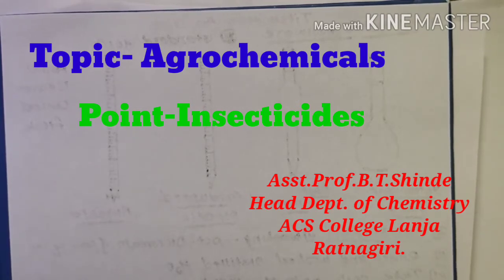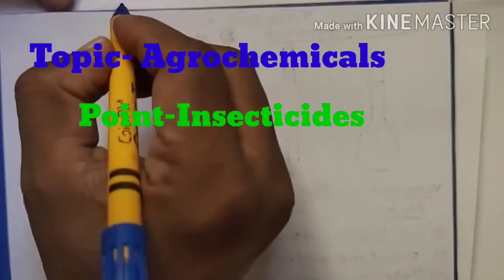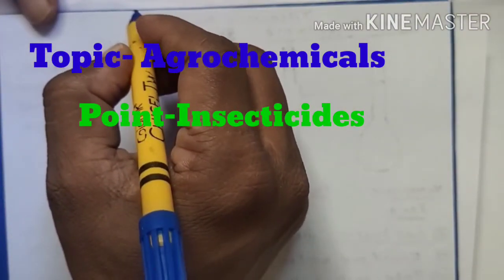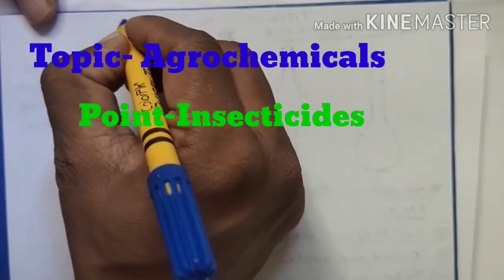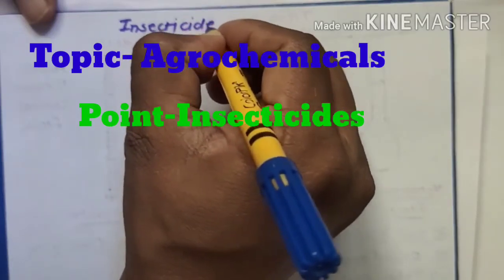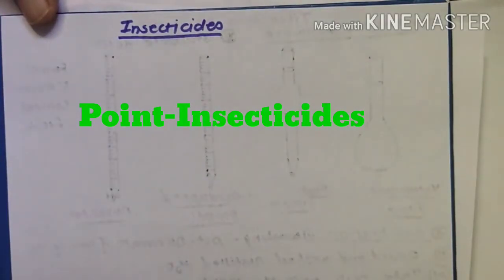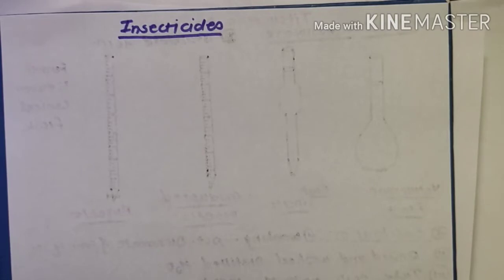The first class of agrochemicals is insecticides. In today's lecture, we will learn about the first class of agrochemicals — that is, insecticides. Insecticides are chemicals that protect the crop from insects by killing them, preventing their attack, and repelling the insect.